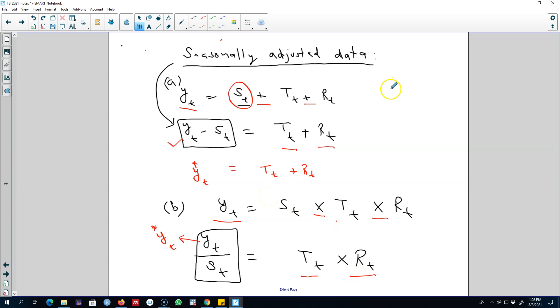So our decision to seasonally adjust the data will depend on whether we are interested in the seasonal patterns in the series or not. If we are not interested in the seasonal variations, then it's better to use seasonally adjusted data, and we can either use the additive model or the multiplicative model and adjust our data for seasonality accordingly.